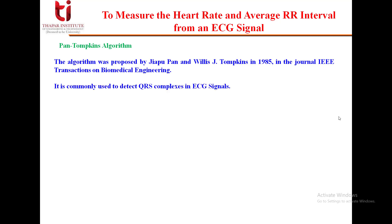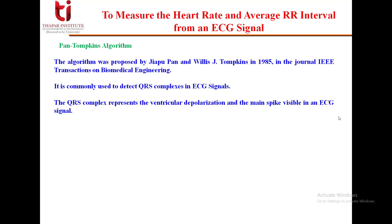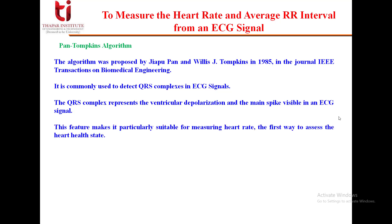As mentioned, it is commonly used to detect the QRS complexes in ECG signals. As we know, the QRS complex represents the ventricular depolarization and the main large spike visible in an ECG signal. This algorithm is based on the analysis of slope, amplitude, and width of these QRS complexes.